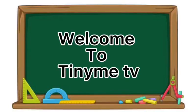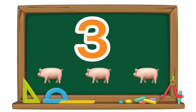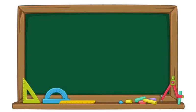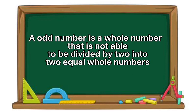Welcome to TinyMeTV. Today we are going to learn about odd numbers. An odd number is a whole number that is not able to be divided by 2 into 2 equal whole numbers.